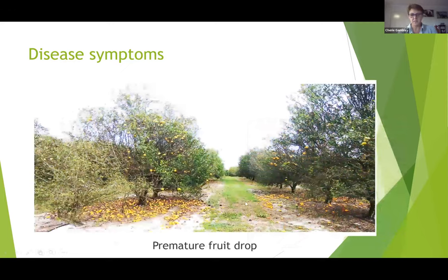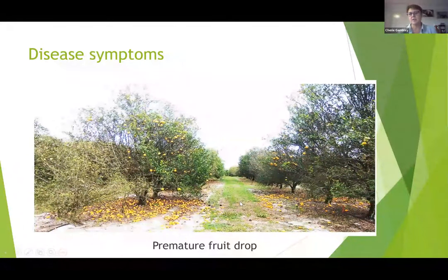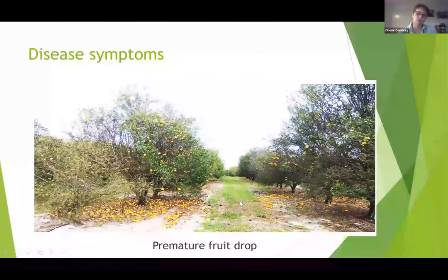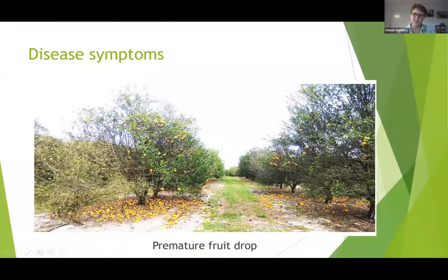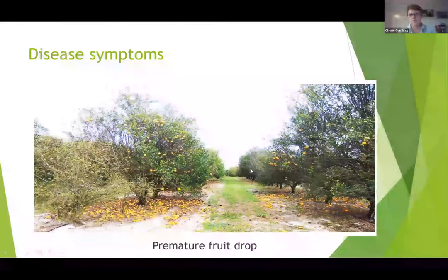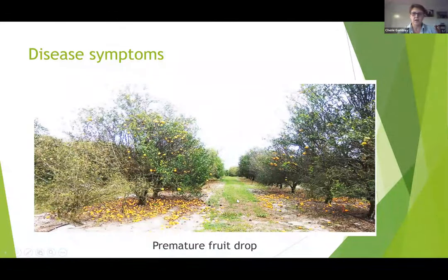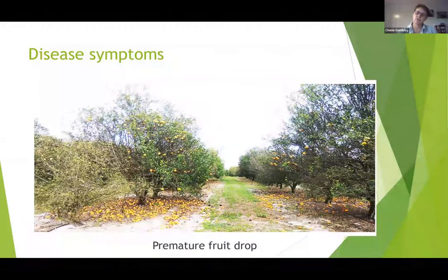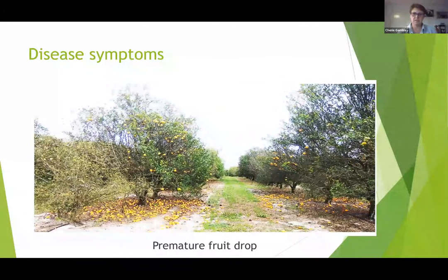This slide is a good illustration of the impact that HLB can have on an orchard. You get premature fruit drop — there's lots of fruit on the ground here — but the tree in the front on the left-hand side is almost dead, and there's one further up that is even more dead. Those trees won't recover and they'll need to be removed and replaced.